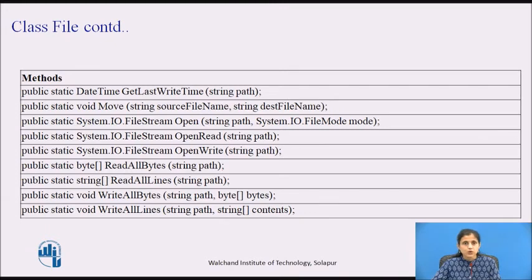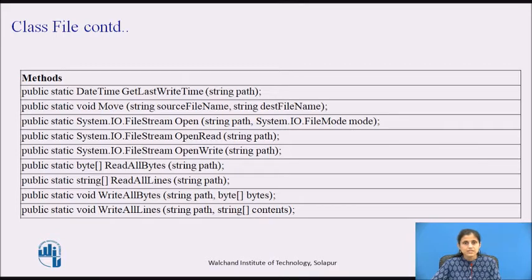The Open method opens a file stream on the specified path with read or write access with no sharing. The OpenRead method opens an existing file for reading. The OpenWrite method opens an existing file or creates a new file for writing.